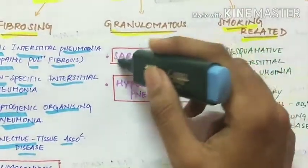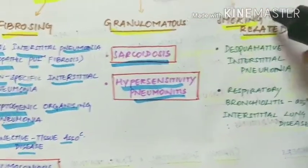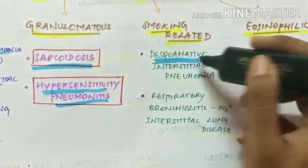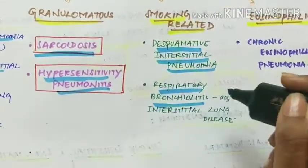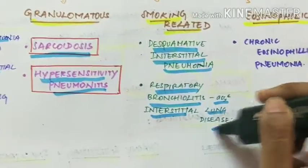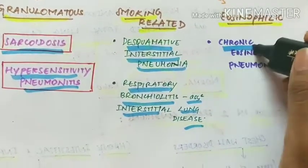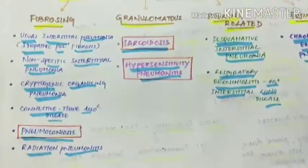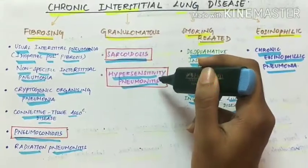Next is granulomatous lung diseases like sarcoidosis and hypersensitivity pneumonitis. The third group is smoking-related, which includes desquamative interstitial pneumonia and respiratory bronchiolitis-associated interstitial lung disease. The last group is eosinophilic chronic interstitial lung disease, which includes chronic eosinophilic pneumonia. The most important ones are pneumoconiosis, sarcoidosis, and hypersensitivity pneumonitis, which we will see in detail.